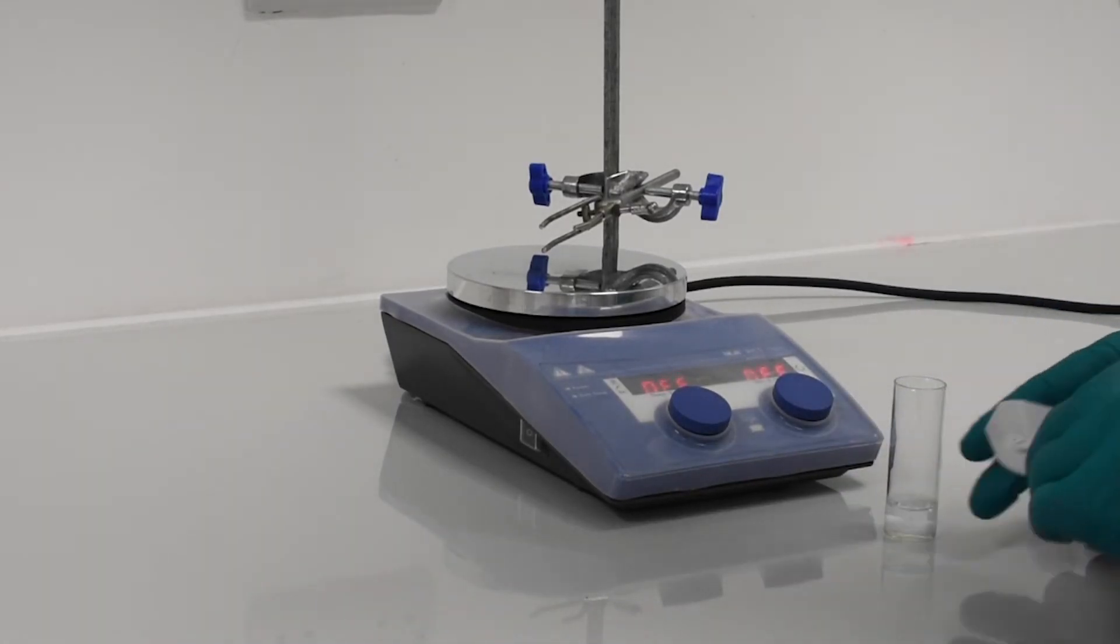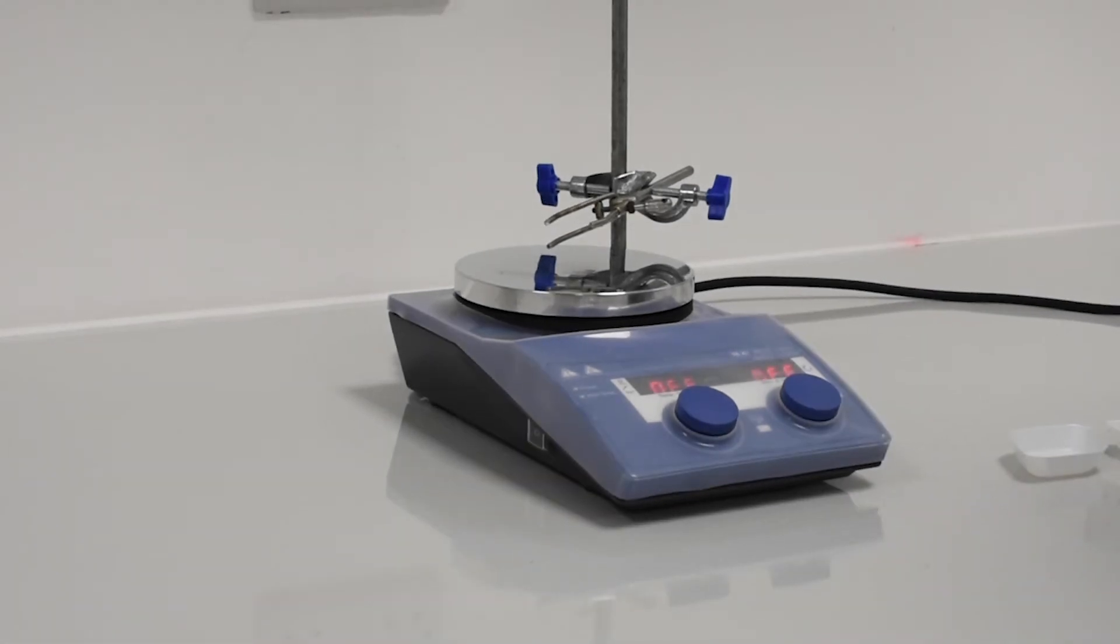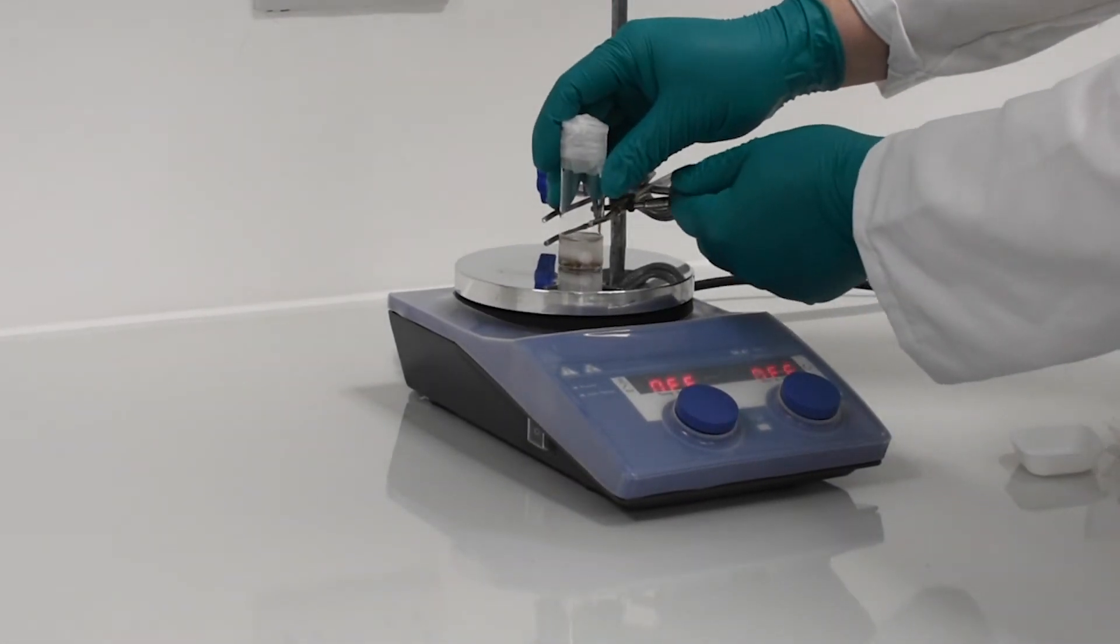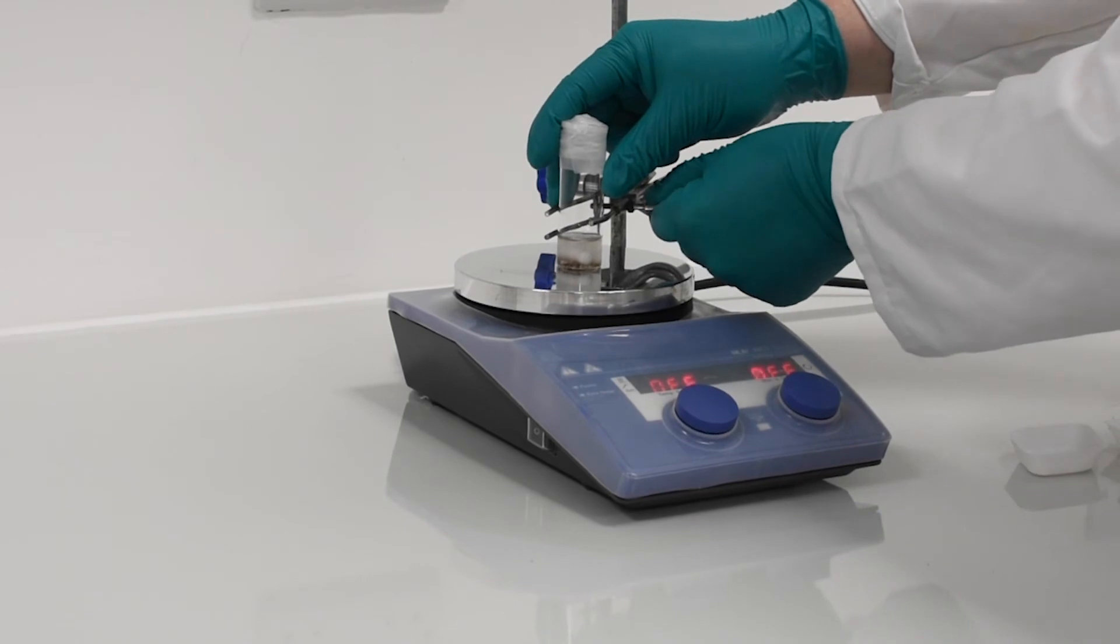In order to simulate the sea and make microplastics, we stirred a vial of water with different plastics and grit for a week at 60 degrees.